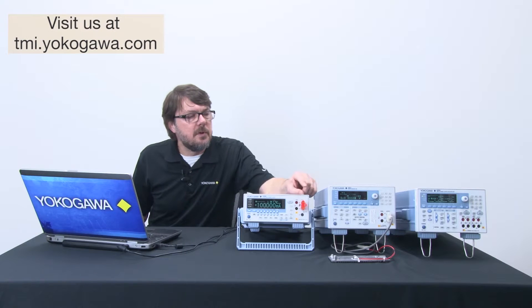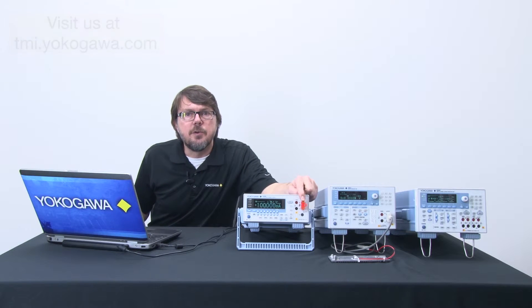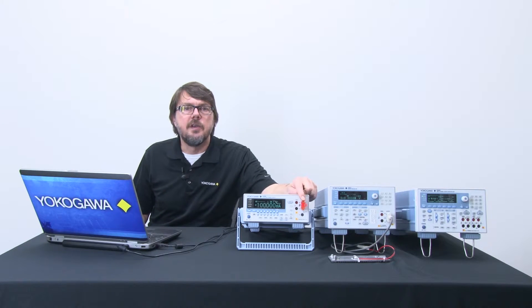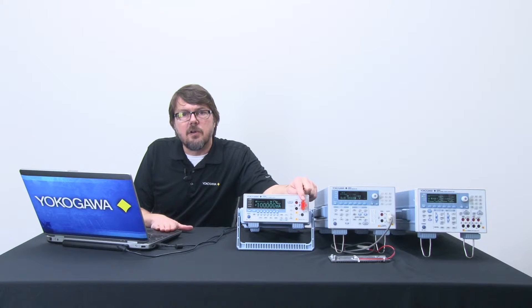First, I'll perform a simple sweep of a silicon diode here on the GS200 using the model GS200. In this case, I will sweep voltage and measure current, save the data to a CSV file and then plot current versus voltage using Excel on the laptop.